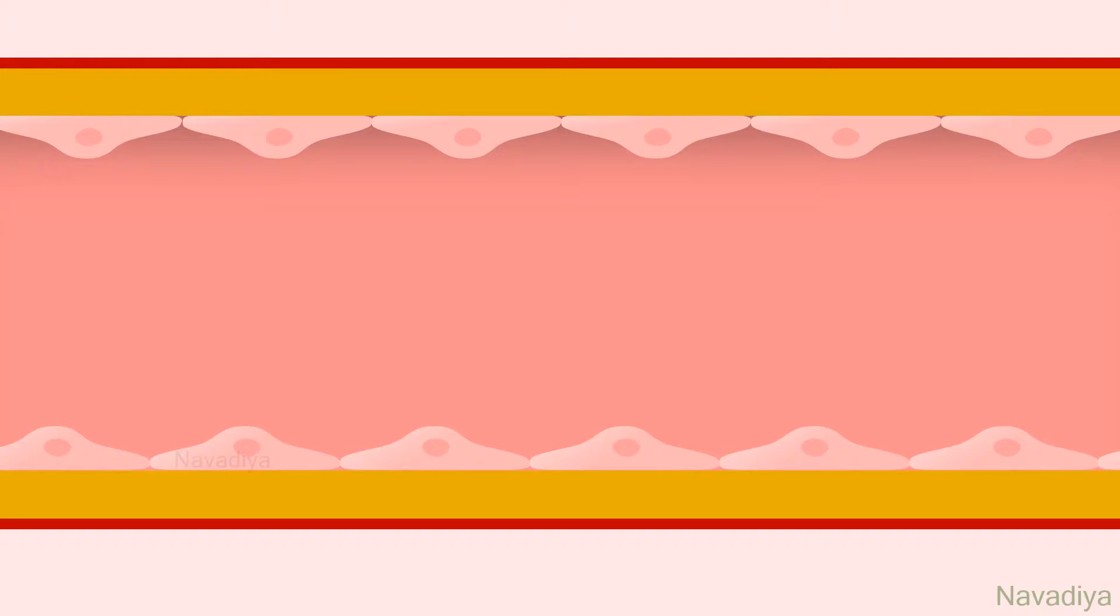In the video of platelet plug formation, we saw that after injury, the break in the vessel wall is initially sealed by platelets and a primary platelet plug is formed. Soon starts the coagulation which converts this plug into a definitive clot.